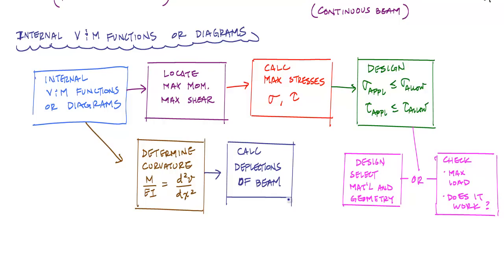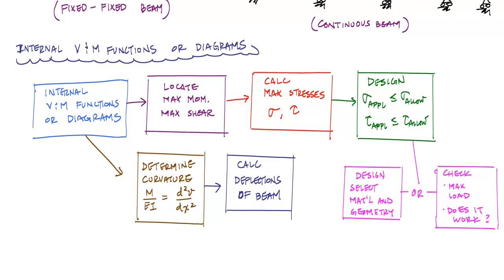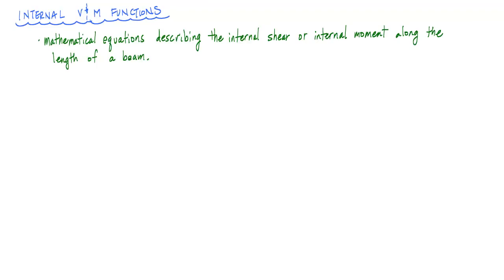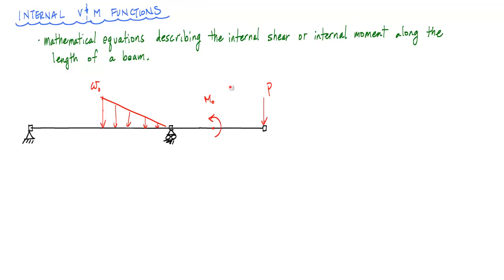Deflection calculations are super important — you don't want a beam that's sagging. It may be strong enough, but if it dips two, three, four inches every time you walk on it, people won't feel safe. All of this — design, checking design, calculating deflections — starts with internal shear and moment diagrams or functions, which are rooted entirely in statics.